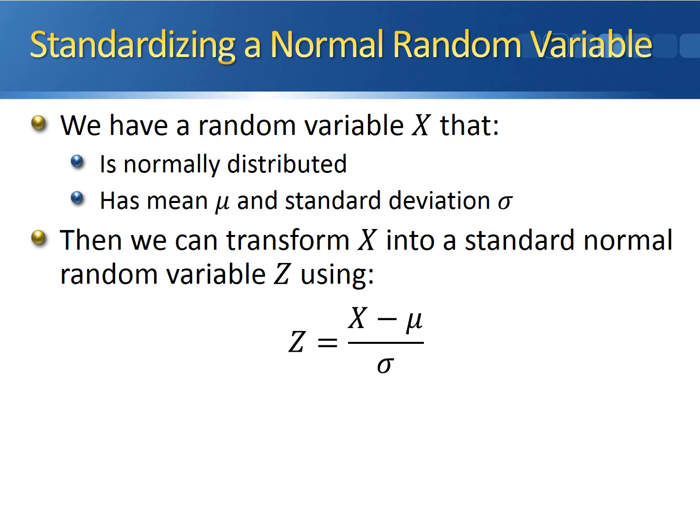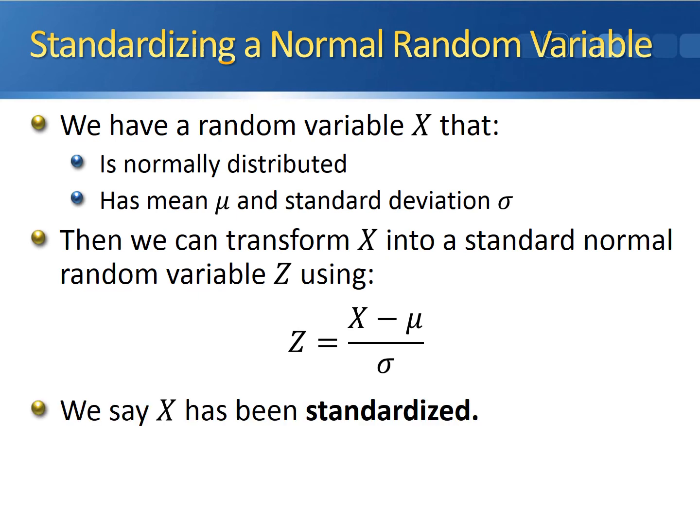We take the value from the normal distribution x, subtract off the mean of its distribution mu, and divide by the standard deviation sigma. After we use this equation, we say that x has been standardized — we've taken x, which was originally just a normal distribution, and turned it into a standard normal random variable.